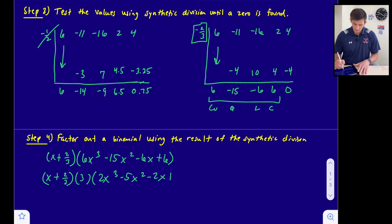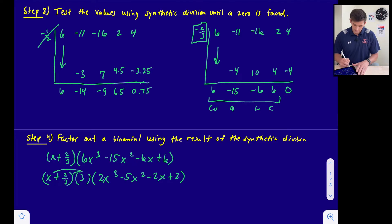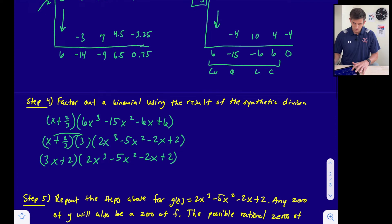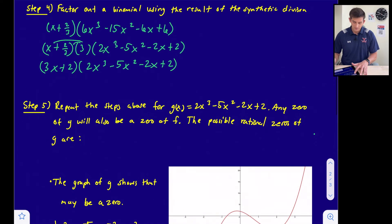Since negative two-thirds is a zero, we can factor out the corresponding binomial. The binomial set equal to zero to give x = -2/3 is (x + 2/3). Using the synthetic division result, our other polynomial factor is 6x³ - 15x² - 6x + 6. We can factor out a 3 from that cubic, giving 3(2x³ - 5x² - 2x + 2).